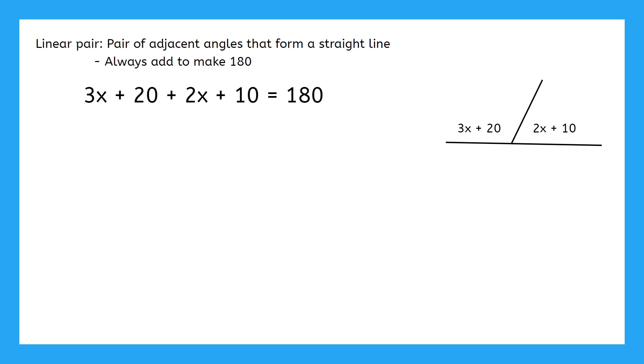Now, we've just got to solve for x. We combine like terms, and we get 5x plus 30 on the left side. Subtract 30 from both sides, and divide by 5. X comes out to 30.